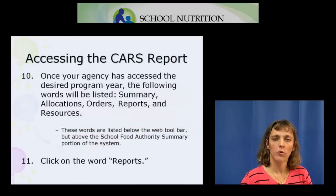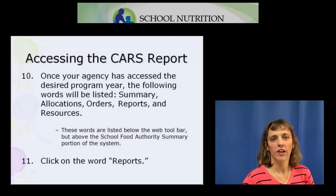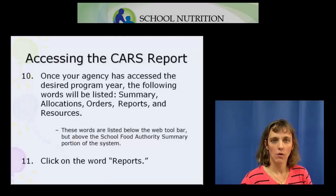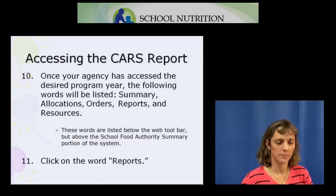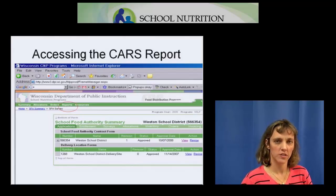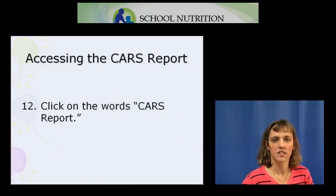Once you've selected the appropriate program year, you will see a boxed-in area on the screen. For the CARS report, look above this boxed-in area where you will see the words: Summary, Allocations, Orders, Reports, and Resources. Click on the word Reports. The word Reports is above the boxed-in area but below where it shows the picture of the state of Wisconsin. Once you've clicked on Reports, you'll see the words CARS Report — click on that.